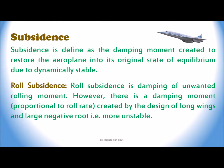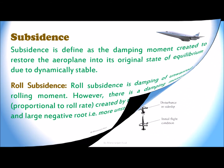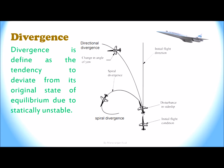Subsidence is defined as the damping moment created to restore the aeroplane to its original state of equilibrium due to dynamically stable conditions. Roll subsidence is the damping of unwanted rolling moment; there is a damping moment proportional to roll rate created by the design of long wings and large negative dihedral, making it more unstable. Divergence is defined as the tendency to deviate from the original state of equilibrium due to statically unstable conditions. Directional divergence is the continued change in yaw angle, and spiral divergence is the continued change in bank angle.